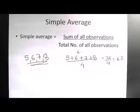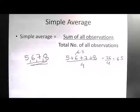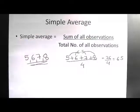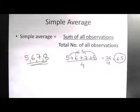So 6.5 is the simple average. If you look at the numbers around the average: 6 is 0.5 less and 7 is 0.5 more; similarly, 5 is 1.5 less than the average and is offset by 8 which is 1.5 more. The sum of all the observations divided by the total number of observations gives us the average value.